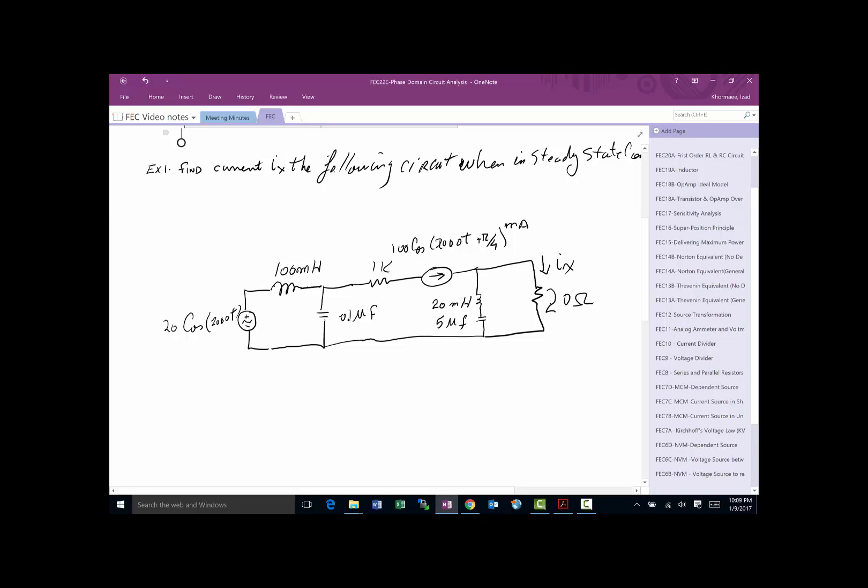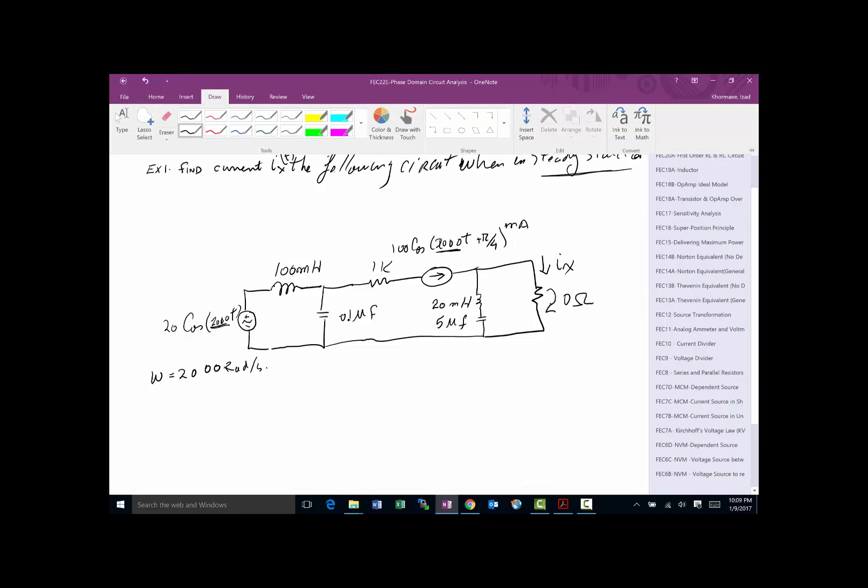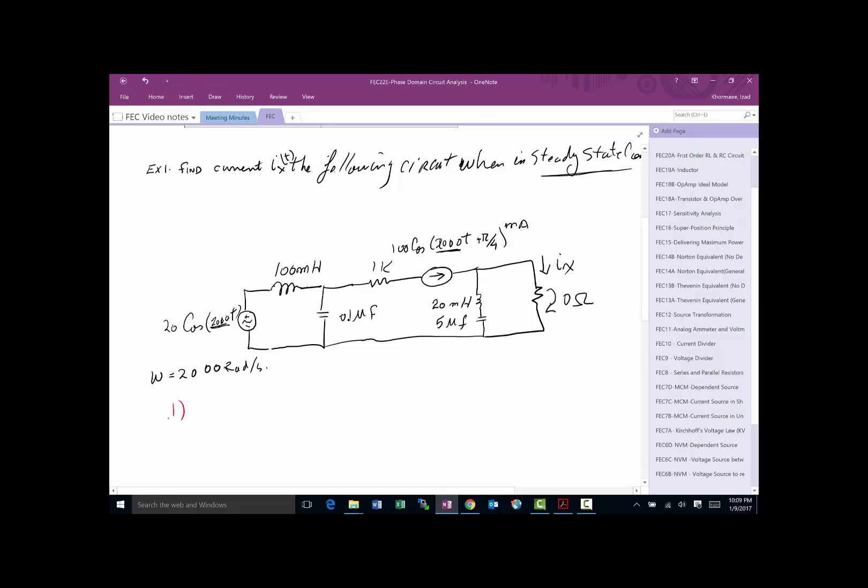In this particular example they're asking you to find I of X in time domain in the following circuit when the circuit is in a steady state. It's really important for you to have steady state given to you. It's very important that all the sources in the circuit have the same frequency. In this case omega is equal to 2,000 radians per second. Step one is we need to convert all elements to phasor.